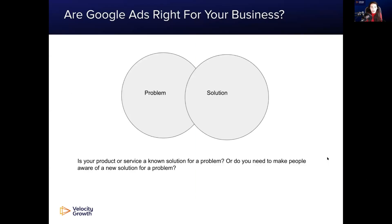Firstly, you need to assess whether Google Ads is right for your business. Google Ads is a fantastic high-intent platform, which means you have the opportunity to get in front of people directly when they are looking for a solution to a problem that they have. This reflects directly on your business's problem-solution fit — is your product or service a known solution for a problem? If so, it makes it very easy to leverage Google Ads to maximize a high-intent audience, because people are aware that your solution exists and will search for it accordingly.